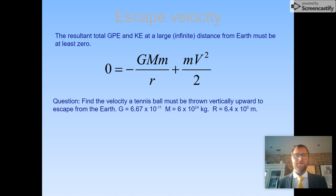The resultant total gravitational potential energy and kinetic energy at large infinite distance must be at least zero. Question: Find the velocity a tennis ball must be thrown vertically upward to escape from Earth. Given: G = 6.67 × 10⁻¹¹, M = 6 × 10²⁴ kg, R = 6.4 × 10⁶ m. Pause for a moment. 11 kilometers per second is what you should have calculated.